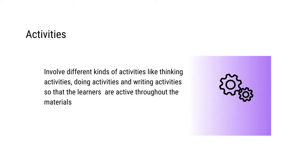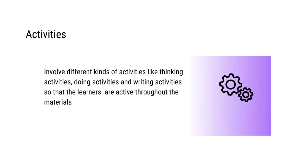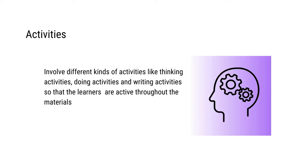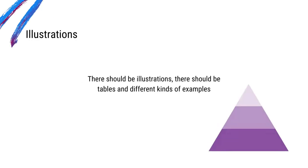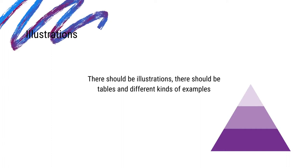Then we have activities. A lot of activities should be there because self-instructional materials should be active. They should involve different kinds of activities — doing activities, writing activities, and thinking activities — so that the learners are active throughout the materials. Self-assessment questions should be there after the end of every session, so the learners get a chance to evaluate themselves at regular intervals and check their progress from time to time. There should be illustrations, tables, and different kinds of examples whenever possible, so that learners don't need to refer to any other materials while reading.